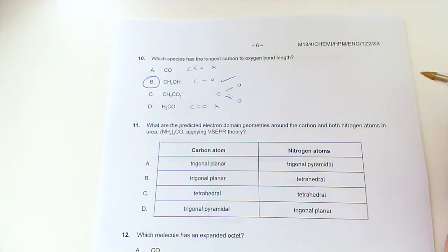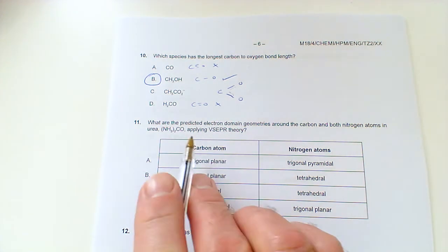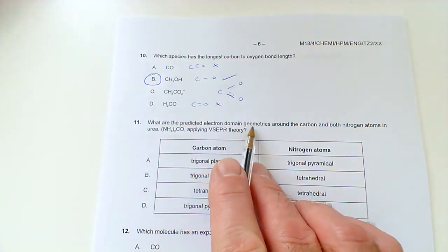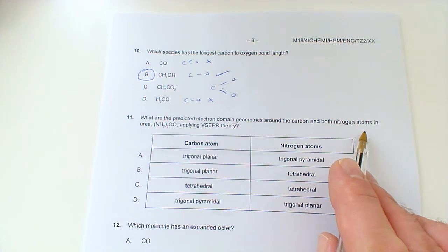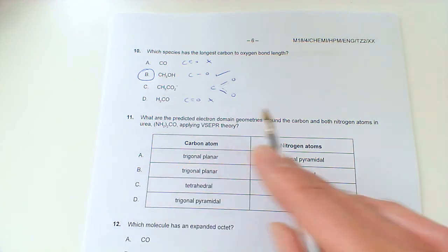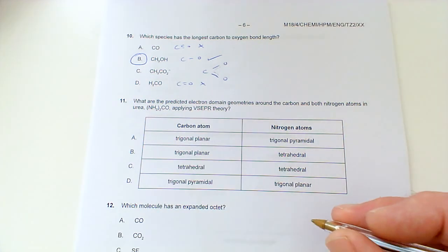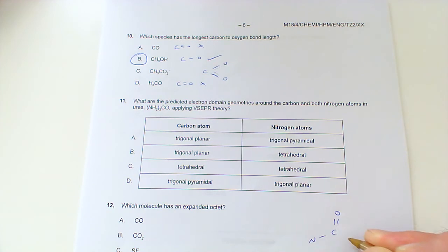Okay, so here's 2018 high-level chemistry questions 11 to 20. What are the predicted electron domain geometries around the carbon and both nitrogen atoms in urea? What does urea look like? If we sketch it down here, you can see a double bond O, and then you've got the NH2s.